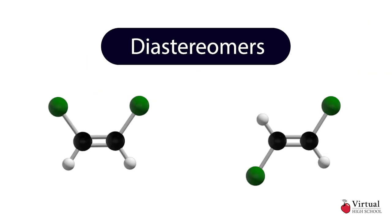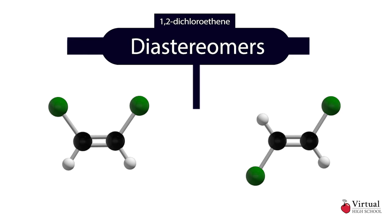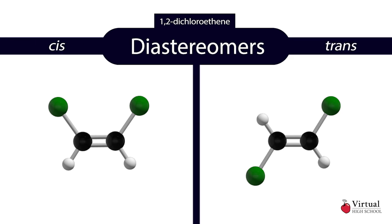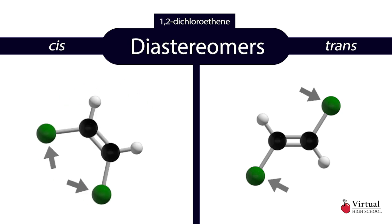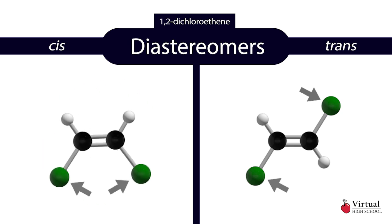Consider these two isomers of 1,2-dichloroethene. Notice that they are cis-trans isomers of one another — the chlorine substituent groups are on either the same or opposite sides of the molecules. Note, however, that there is no way to orient or arrange these two molecules such that they are mirror images.